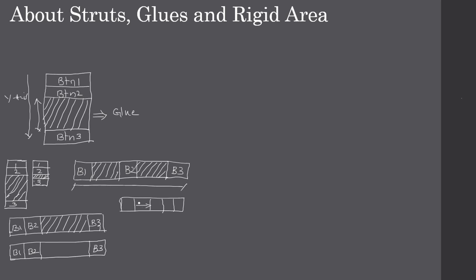You can see the spacing between button one and button two as well as button two and button three — let's say this is X and this is Y, X equals Y. So button one, button two, and button three are spaced equally in the horizontal direction, and these are the glues.